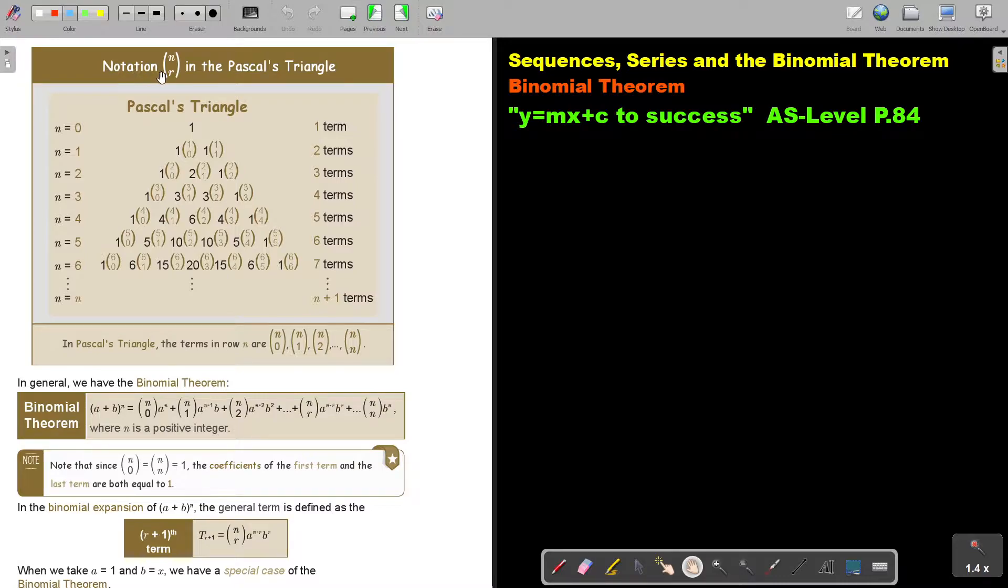Let's look at the notation N over R in the Pascal's triangle. So to get these values, this is 1, and then (1,0), (1,1). Then, if this is the second row, (2,0), (2,1), (2,2). Third row, (3,0), (3,1), (3,2), (3,3), and so on.